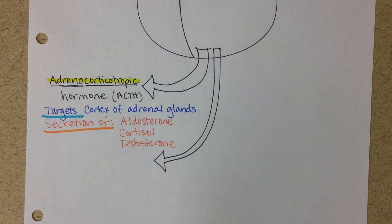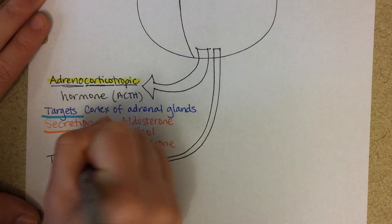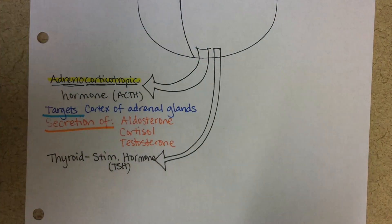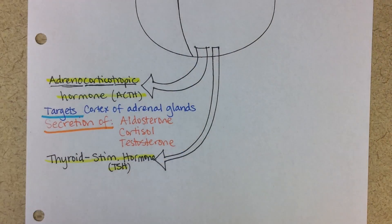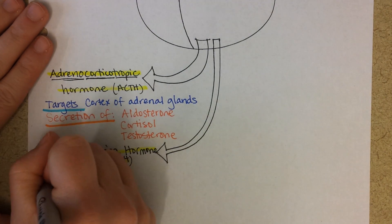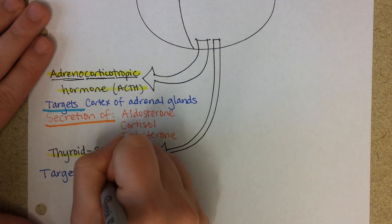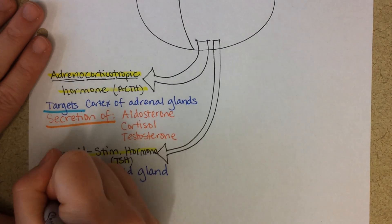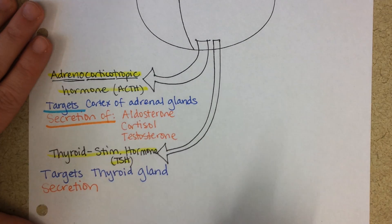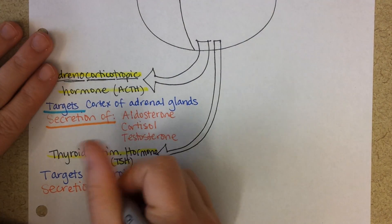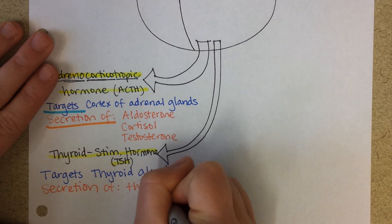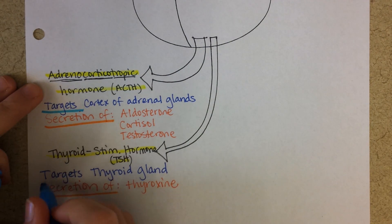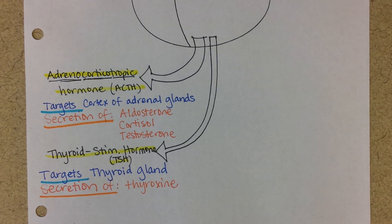Next is thyroid-stimulating hormone, or TSH. The target of TSH is the thyroid gland, and it causes secretion and production of thyroxin, which is your thyroid hormone. The receptors for this hormone are found on the thyroid gland. That is number two.